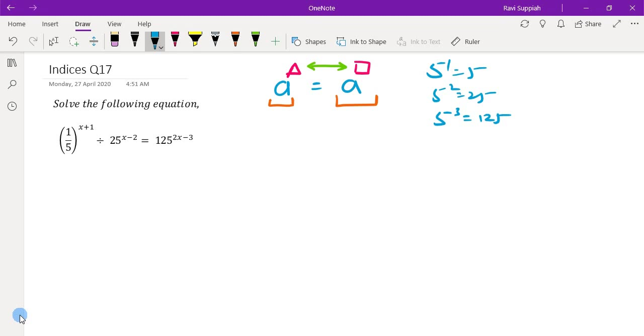So for this first bracket here, 1 over 5, it comes to the rule that says 1 over a to the n is equals to a to the power of minus n. So in this case, it's 1 over 5, which means 1 over 5 to the power of 1. So if I were to apply this rule,